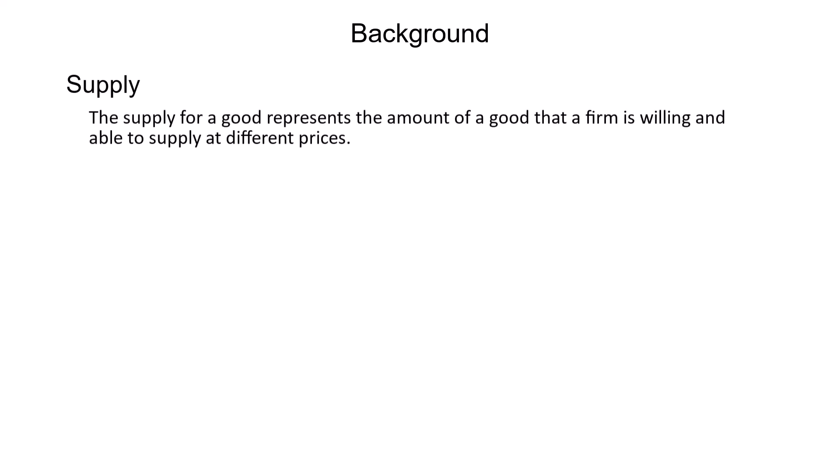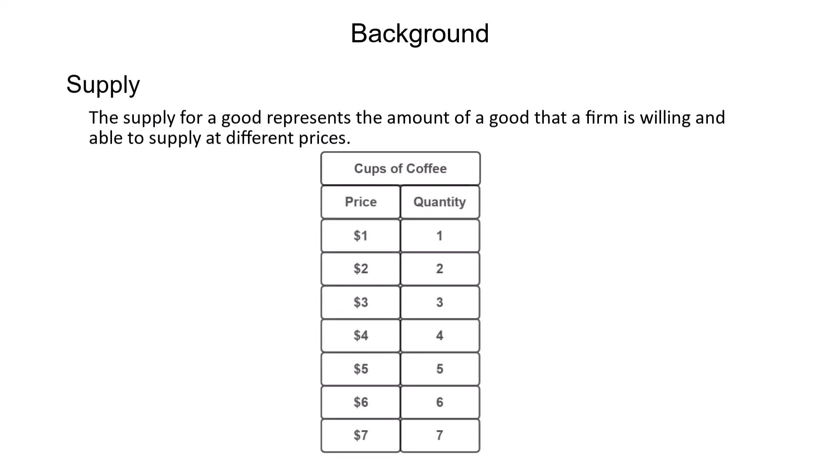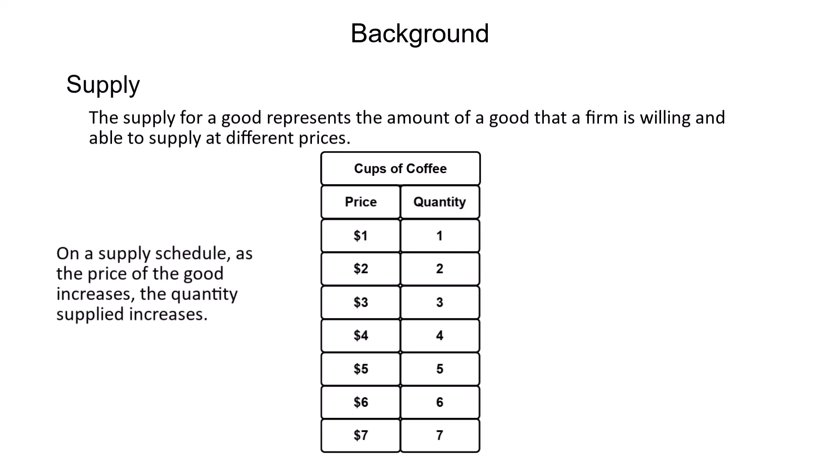The supply of a good represents the amount of a good that firms are willing and able to supply at different prices. The supply of a good may be represented as a schedule or a table of prices and their associated quantities. For example, a table representing the supply of cups of coffee might look something like this. Notice that as the price of a cup of coffee increases, the quantity supplied increases as well.